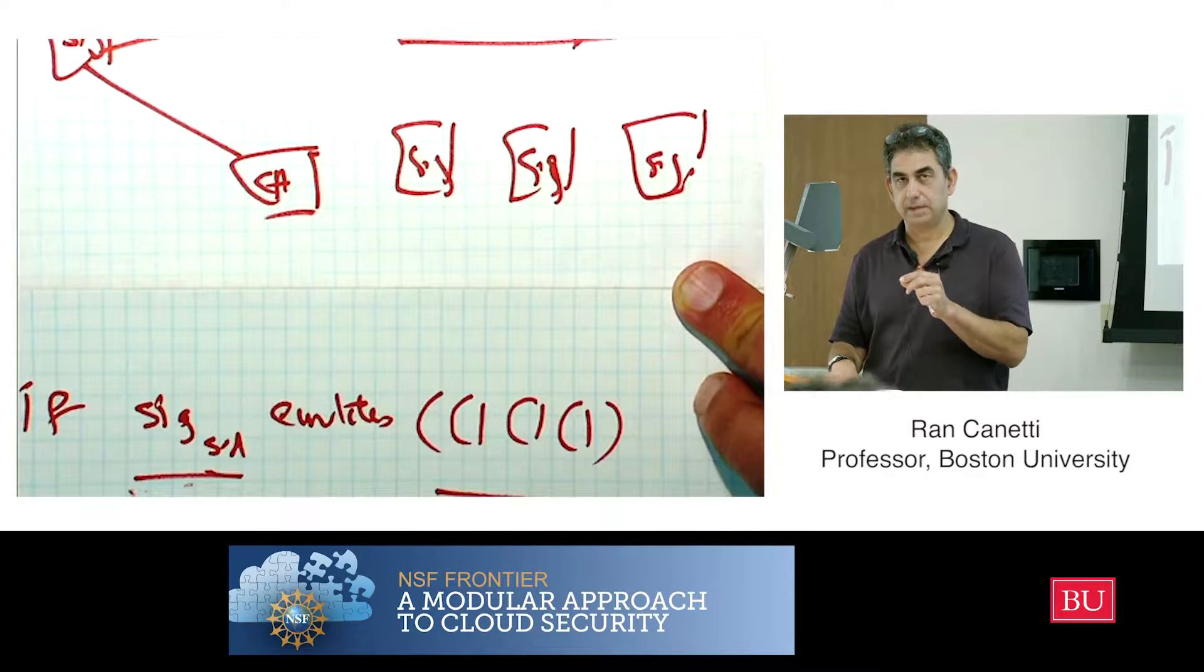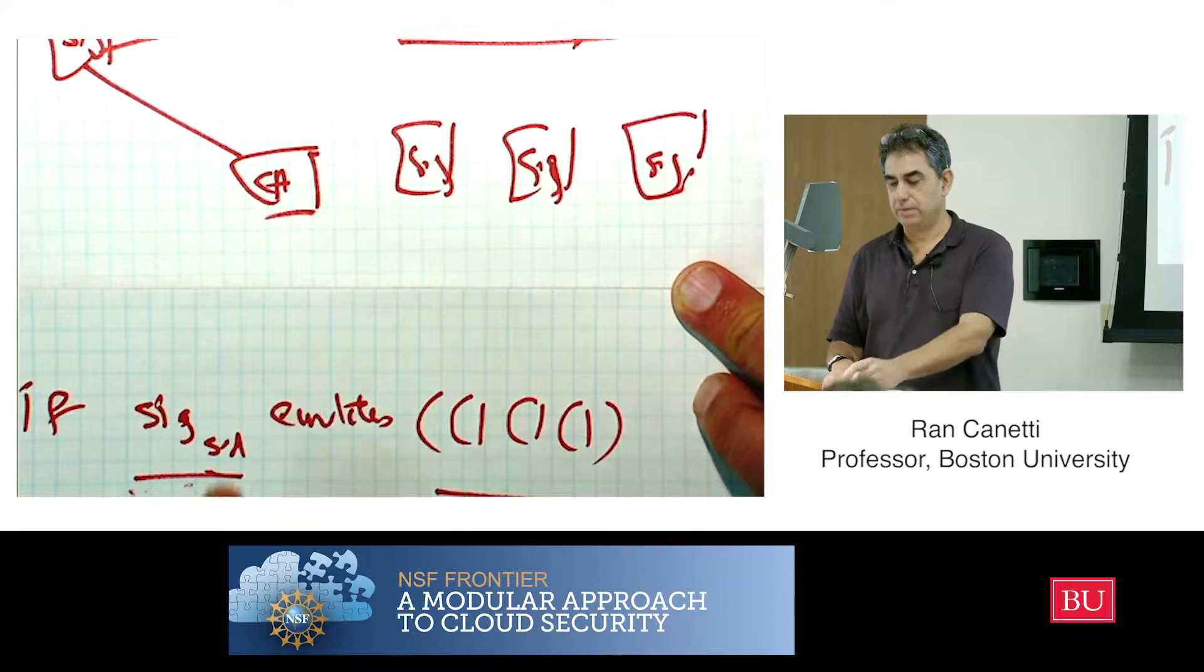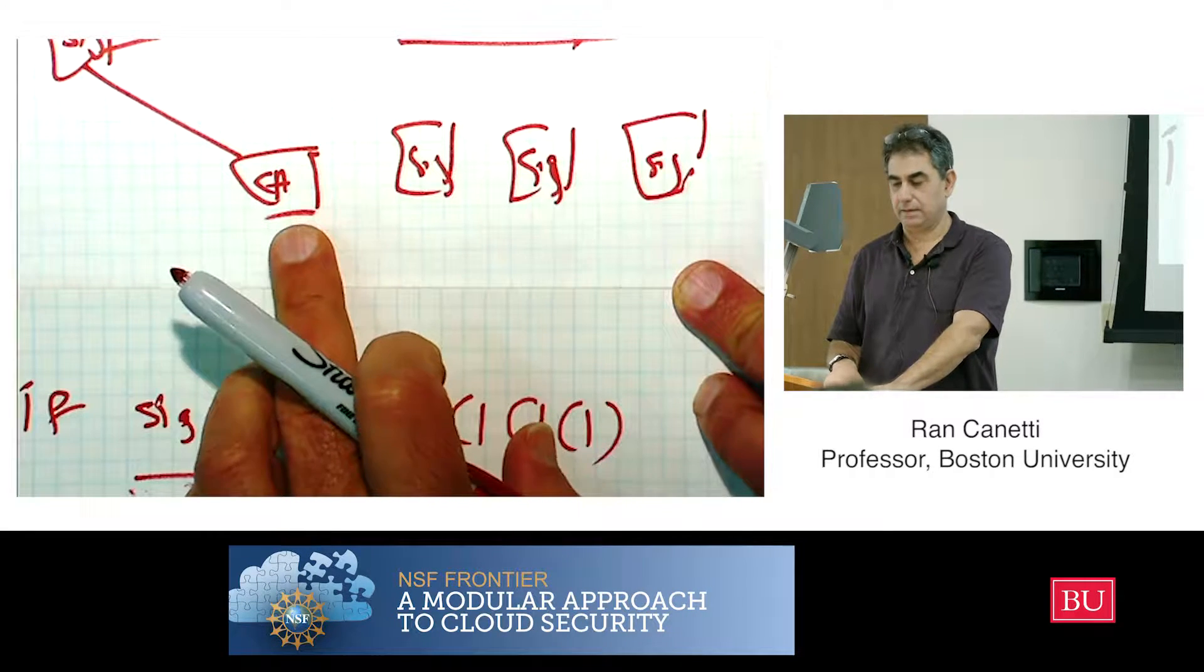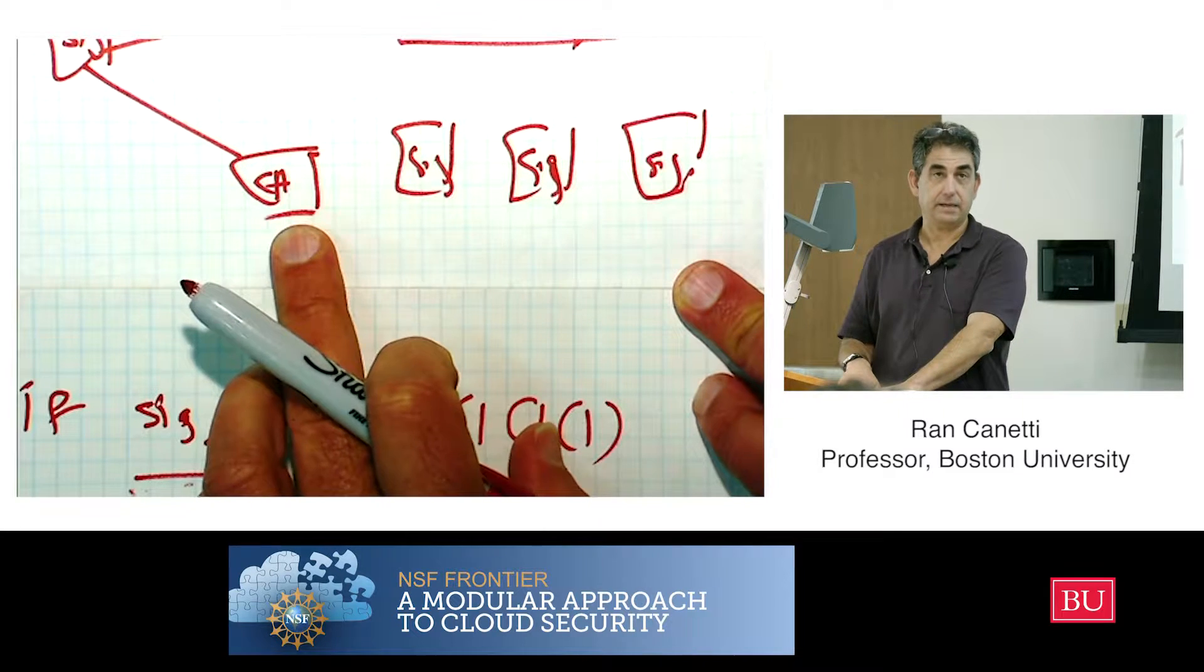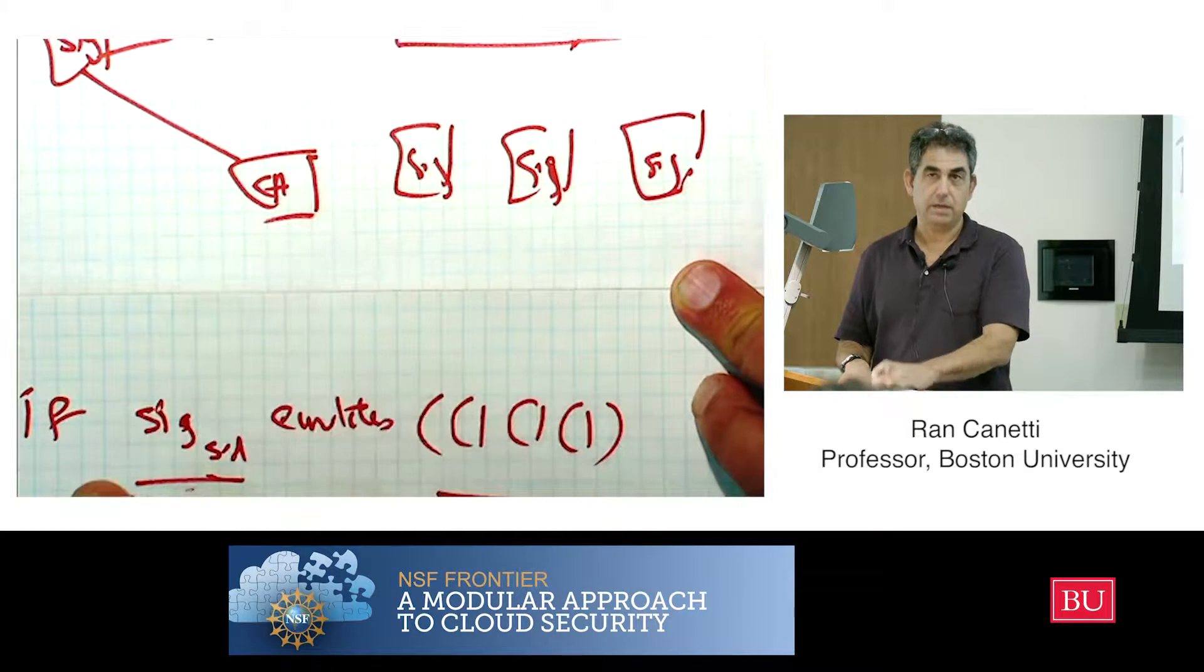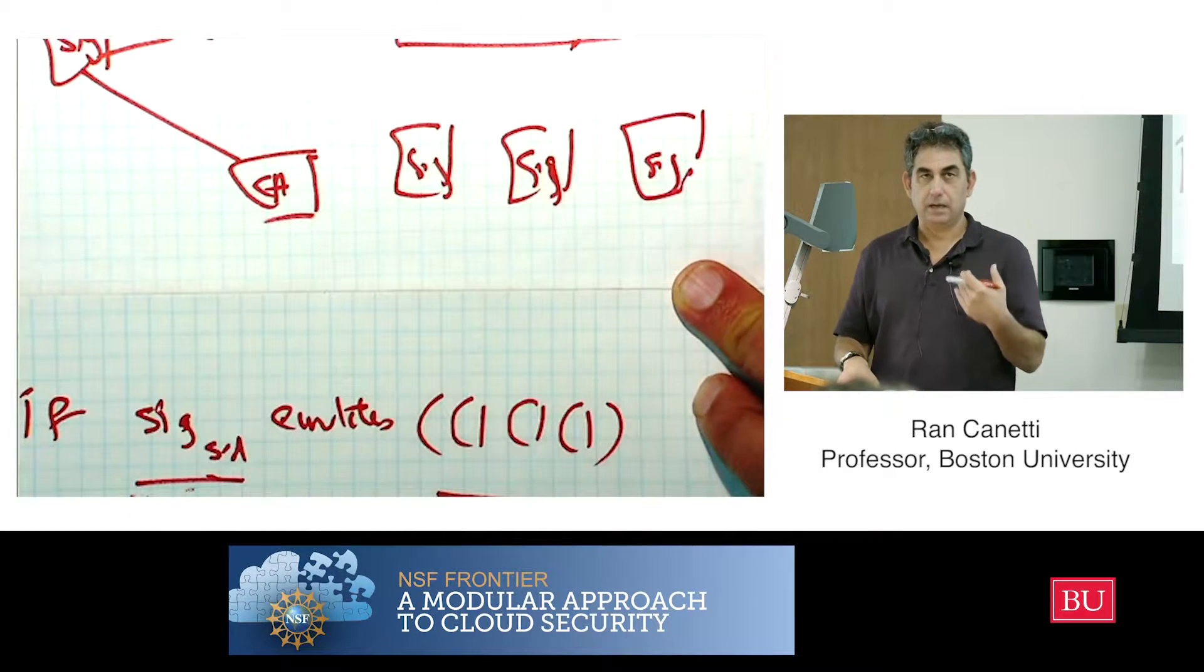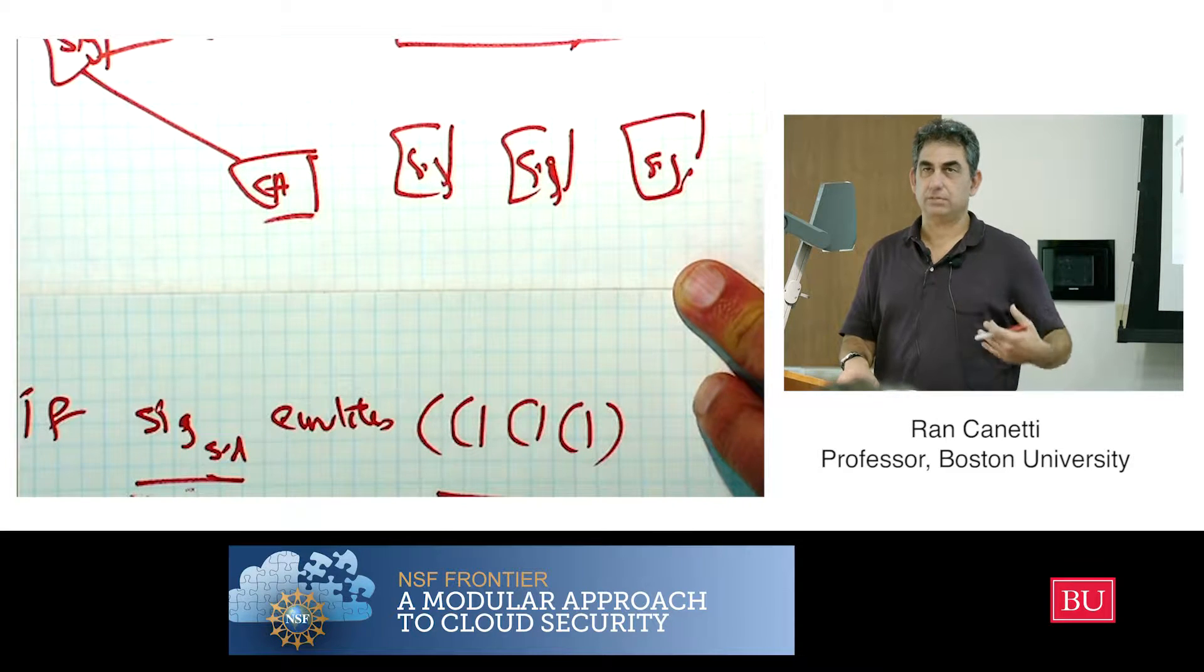But our modeling is a little bit optimistic because we treated the CA, which is this bulletin board, as something which is a component of our protocol, a subroutine of our protocol.